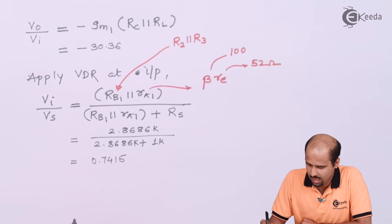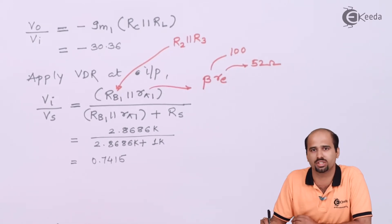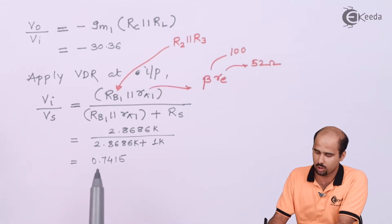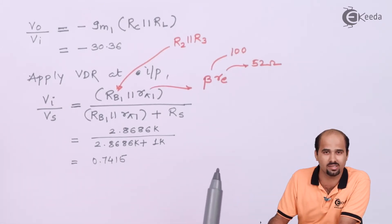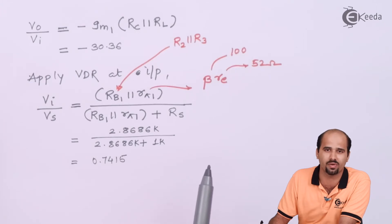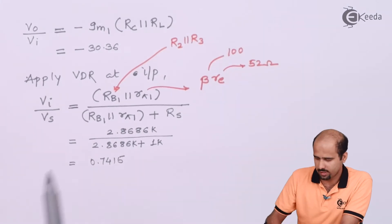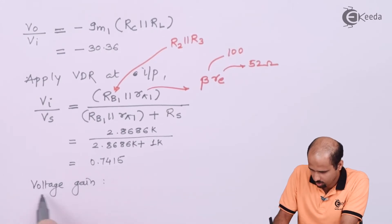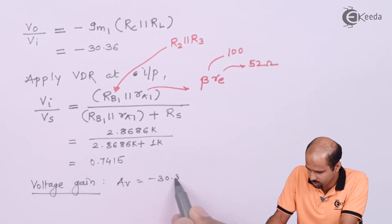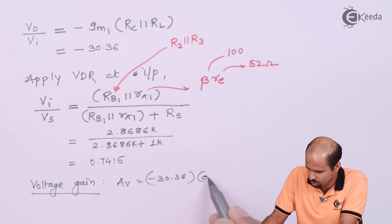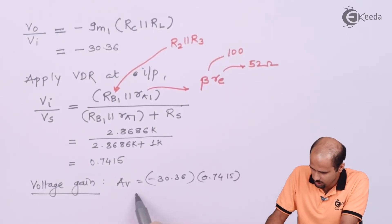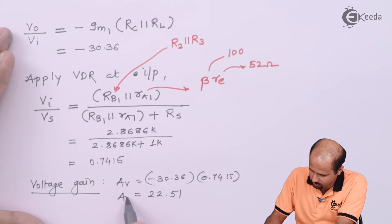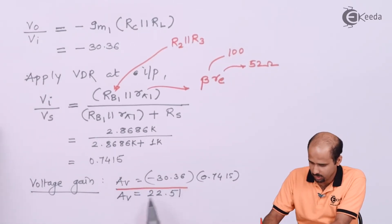Connecting the source resistance reduces the voltage gain. The final voltage gain Av = Vo/Vi × Vi/Vs = −30.36 × 0.7415 = −22.51. This is the small signal voltage gain for this cascode amplifier.